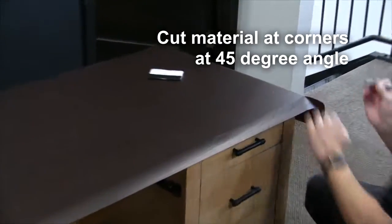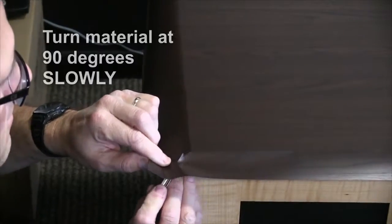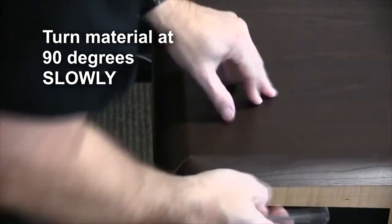The first step to wrapping the sides of the desktop is to utilize a relief cut on all four corners. After all four relief cuts have been performed, you're going to want to wrap the sides one by one.